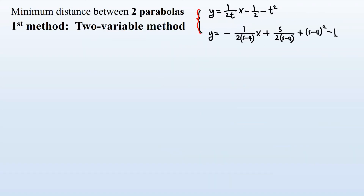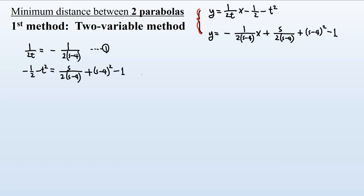Since the two normal lines must be equal, their slopes and intercepts must match. From the slopes: 1 over 2t equals minus 1 over 2(s minus 4). From this first equation, 2t equals minus 2(s minus 4), therefore t equals 4 minus s.